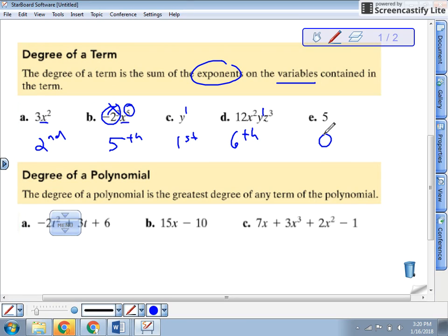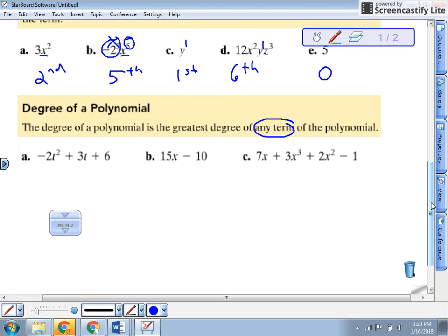What's the degree of a polynomial then? The degree of polynomial is the greatest degree of any term. So we find the degree of each term. And whichever one is the greatest, that's our degree of polynomial. We don't have to add them all together.